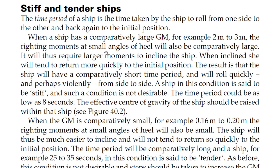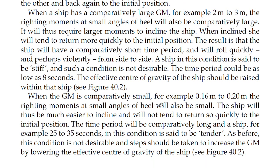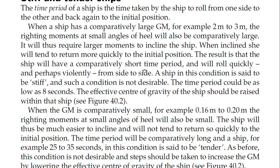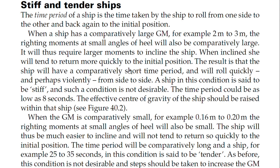To summarize: a stiff ship has a comparatively large GM of around 2 to 3 meters, a large righting moment at small angles of heel, requires a large moment to incline, and rolls back quickly in around 8 seconds. A tender ship has a small GM of 0.16 to 0.20 meters, a small righting moment, is easier to incline, and has a time period of 25 to 35 seconds. The desirable condition is a time period of 15 to 25 seconds — between stiff and tender.